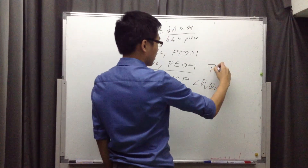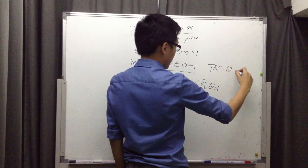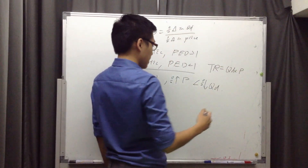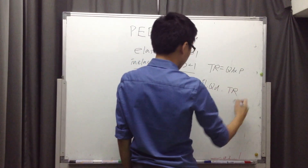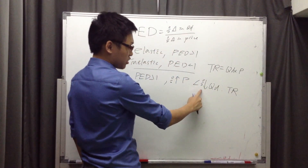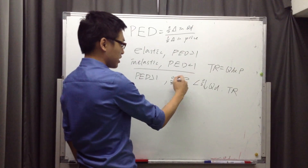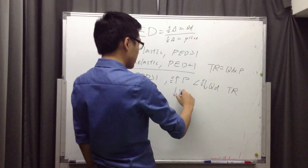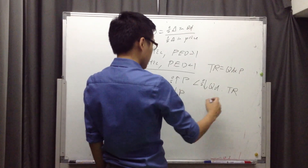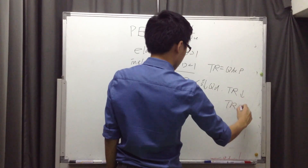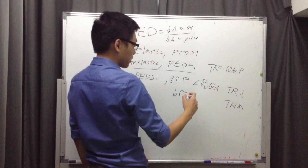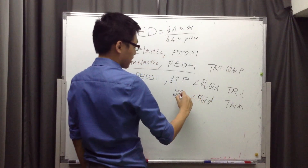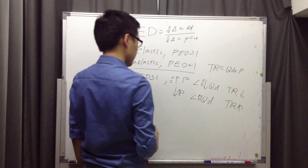Since total revenue equals quantity demanded multiplied by price, total revenue will fall, because the fall in quantity demanded in percentage terms is greater than the percentage increase in price. In this situation, if you lower price instead, total revenue is going to go up, because by lowering price, quantity demanded increases, and the increase in quantity demanded is even greater than the decrease in price. This is the first case.